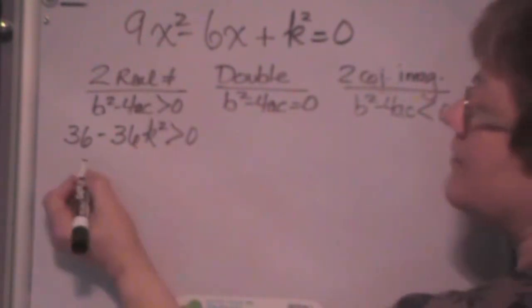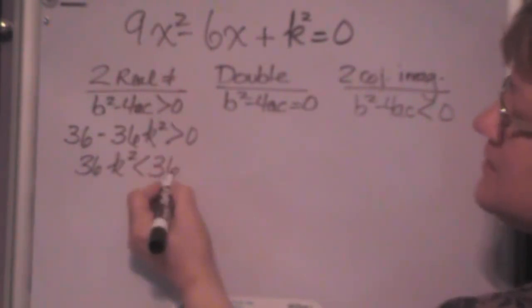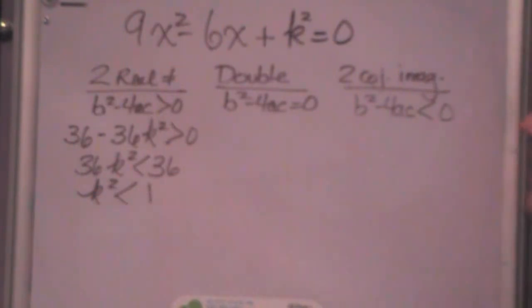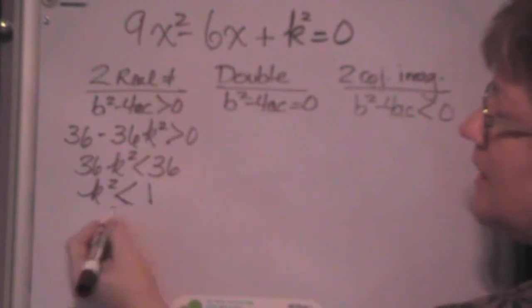Now we have 36k squared is less than 36 just by flipping it around and changing the sign. Now I divide both sides by 36. k squared is less than 1. Now we need to do the rest of these because when I have something going to be less than 1, it could be a lot of different things. But let's figure out the rest of these because this one, k squared is less than 1.